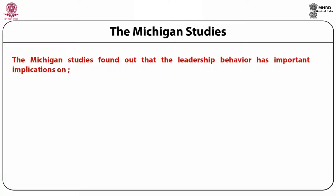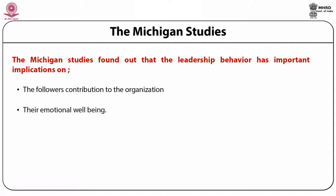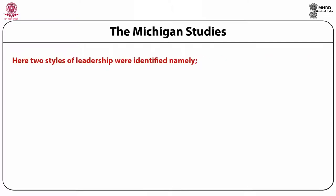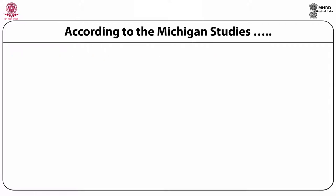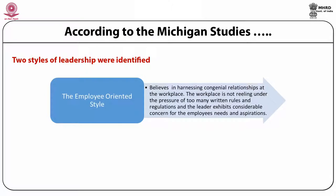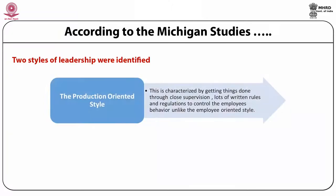The Michigan studies found that leadership behavior has important implications on the followers' contribution to the organization and their emotional well-being. Two styles of leadership were identified: employee-oriented and production-oriented. The employee-oriented style believes in harnessing congenial relationships at the workplace, with the leader exhibiting considerable concern for employees' needs and aspirations. The production-oriented style is characterized by getting things done through close supervision and many written rules and regulations to control employee behavior.